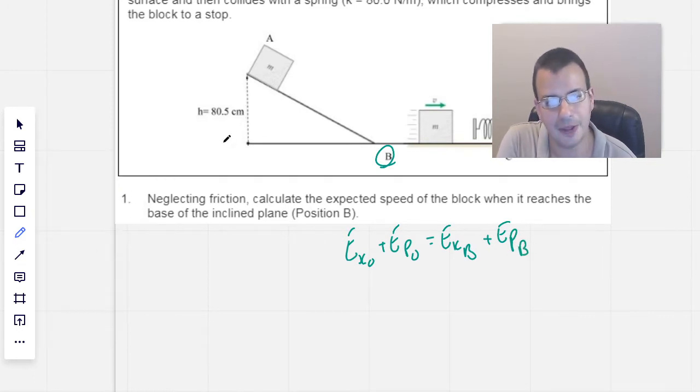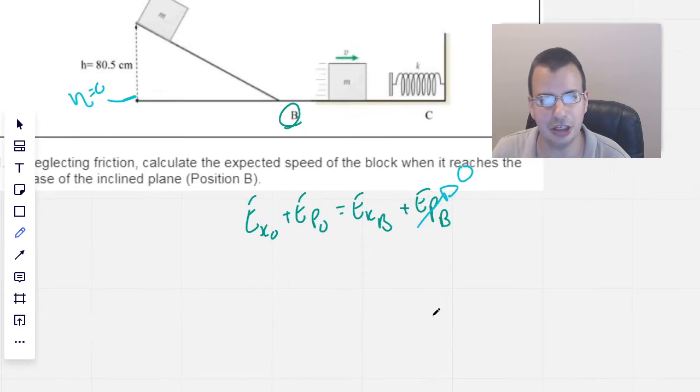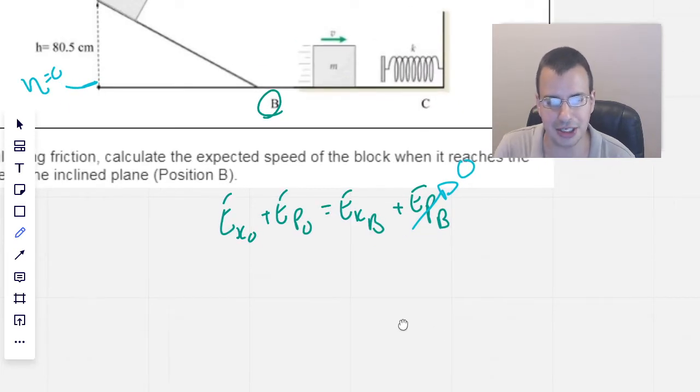I'm also going to say that this ground is height equals zero, that way the potential energy at B will be zero, because potential energy in this case is going to be due to gravity, which is mass times gravity times height.